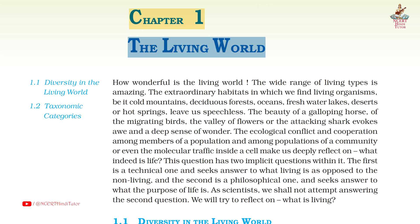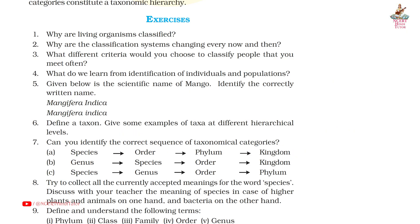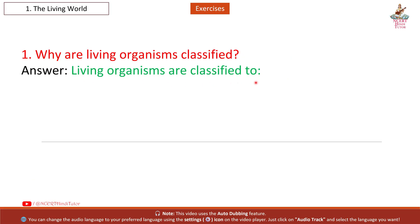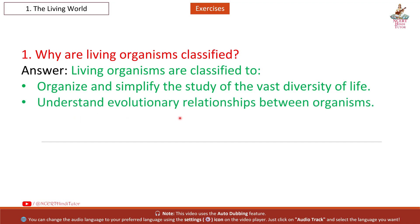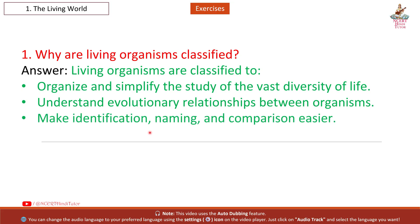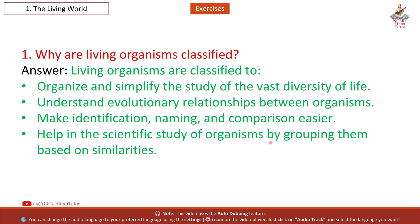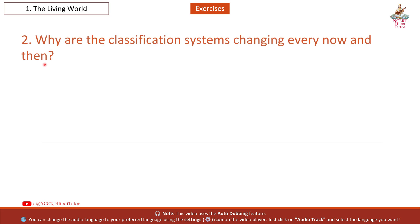Chapter 1: The Living World — Question Answers from Class 11 Biology Exercises. Question 1: Why are living organisms classified? Answer: Living organisms are classified to organize and simplify the study of the vast diversity of life, understand evolutionary relationships between organisms, make identification, naming and comparison easier, and help in the scientific study of organisms by grouping them based on similarities.